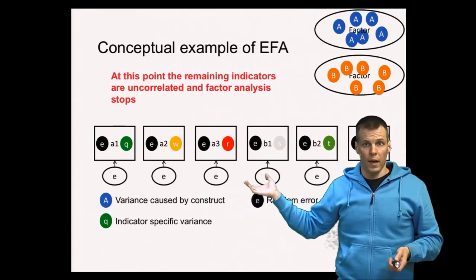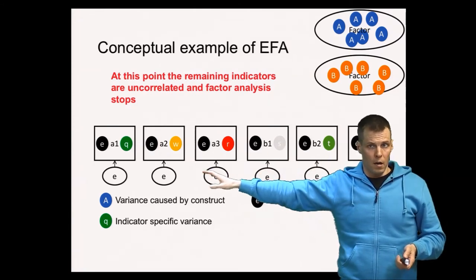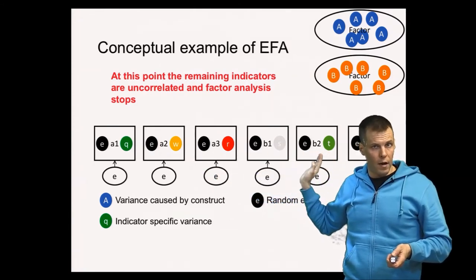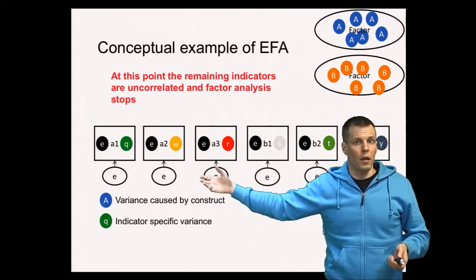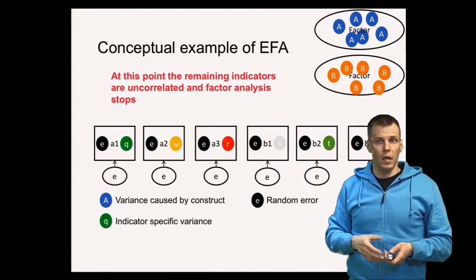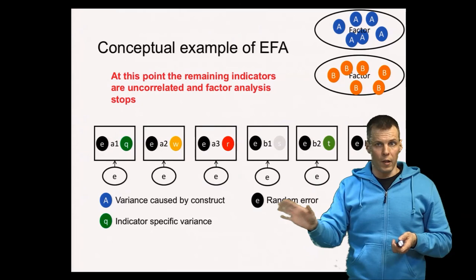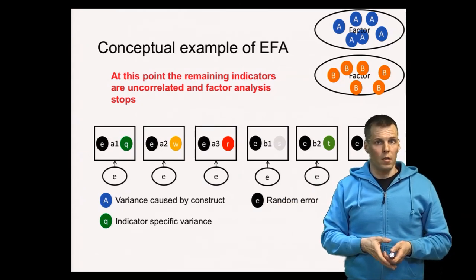In which case the factor analysis says I have discovered two factors. These two factors explain the intercorrelation of the variables completely. The remaining variation in the data are simply unique features of these indicators or unreliability. So that's the conceptual idea: we extract variation, then we do it over and over until there's no more covariance to extract.